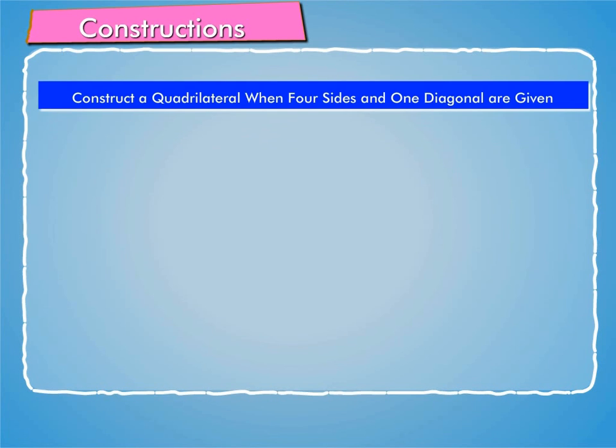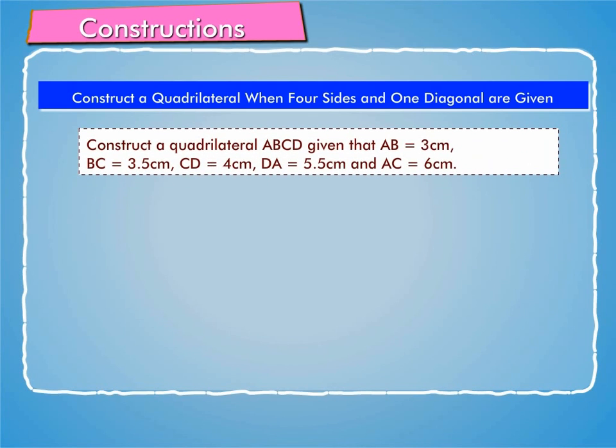Let us first learn to construct a quadrilateral when four sides and one diagonal are given. Let us construct a quadrilateral ABCD.